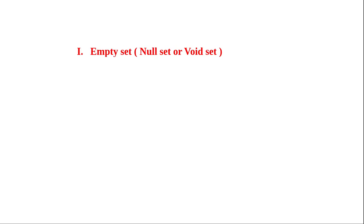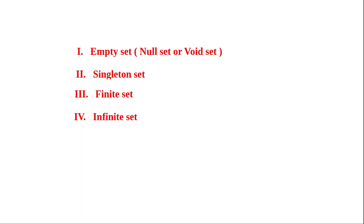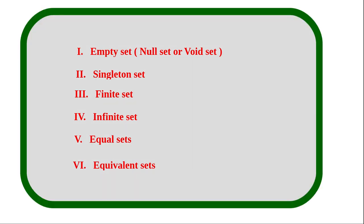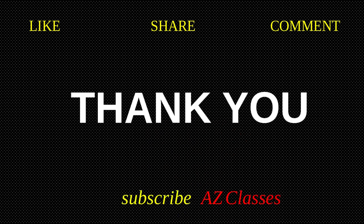Today we discussed types of sets. First: empty set (null set / void set) — contains no elements. Second: singleton set — contains only one element. Third: finite set — has a definite number of elements. Fourth: infinite set — a set which is not finite. Fifth: equal sets — two sets with exactly the same elements. Sixth: equivalent sets — two sets with the same cardinality. Today's class is over. Please learn these facts clearly and thoroughly. See you in the next class. Have a nice day, goodbye.